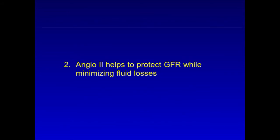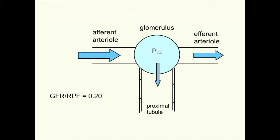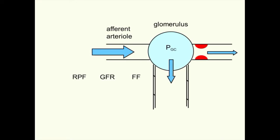At the same time as it decreases renal blood flow, A2 actually helps to keep GFR from falling too much. Normally, about 20% of renal plasma flow passes through the glomerular basement membrane and becomes filtrate. So GFR divided by renal plasma flow produces the so-called filtration fraction of 0.20. Remember that A2 affects primarily the efferent arteriole in the glomerulus. If the efferent constricts, blood backs up behind that constriction and increases glomerular capillary hydrostatic pressure and increases the percent of plasma that gets filtered. To illustrate this with numbers, suppose that in the normal state, renal plasma flow is 600 mLs per minute and GFR is 20% of that, or 120, with a filtration fraction of 0.20.